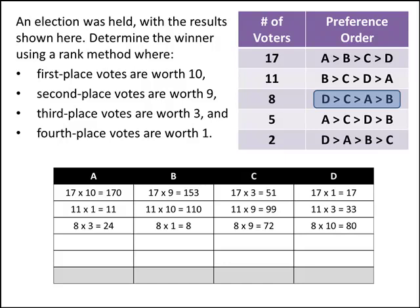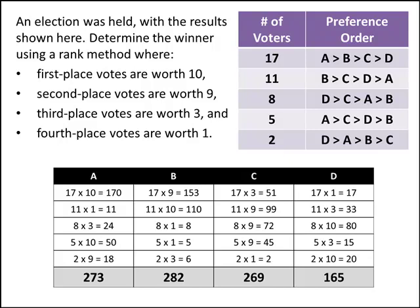We fill in the next row and then the next row. Finally, we add up the totals. A has a total of 273 points, B has 282, C has 269, and D has 165. The winner of this rank method election is the candidate that received the largest total number of points, which in this case is B. So B is the winner of this rank method election.